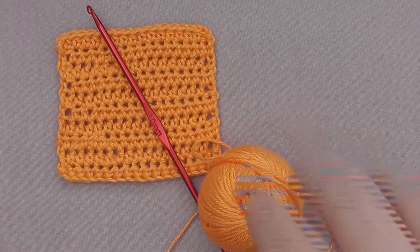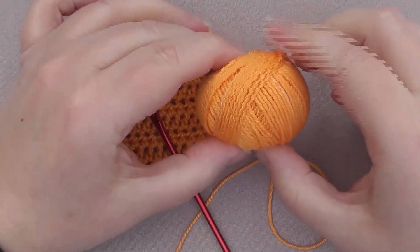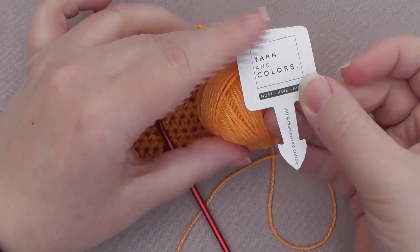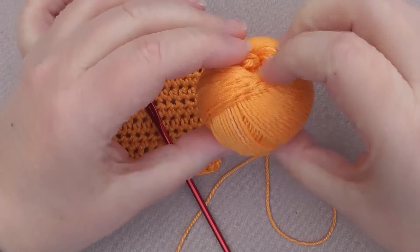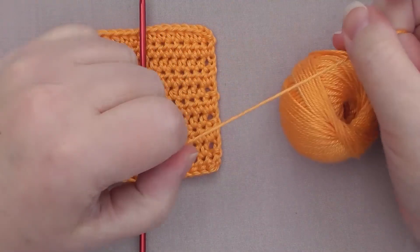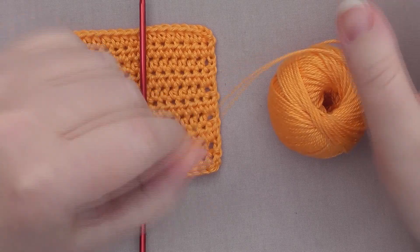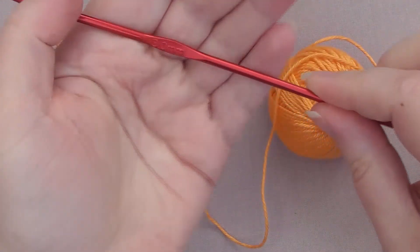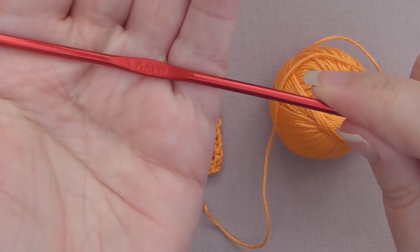So this is just 100% mercerized cotton. It's from yarn and colors, but it doesn't matter, any mercerized cotton will do, any cotton will do, to be honest. This is four ply, so it's a bit thinner than DK and I'm using a three millimeter hook.